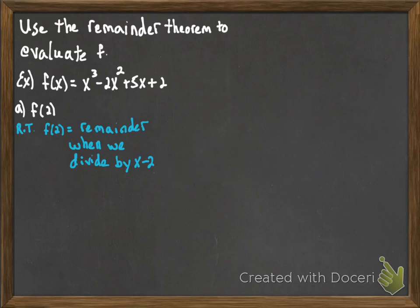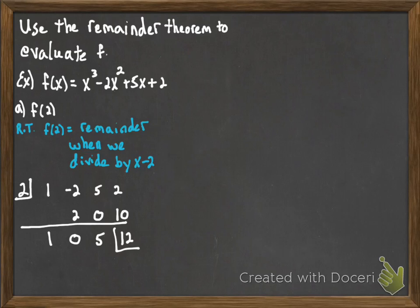We want to divide by x - 2, so we write down 2, which is what we're evaluating, f(2). Then our coefficients, and we perform the process. The 1 comes down, 2 times 1 is 2, -2 + 2 is 0, 2 times 0 is 0, bring down the 5. 2 times 5 is 10, 2 + 10 is 12, and so f(2) is 12.